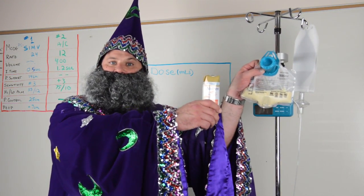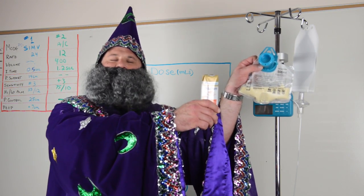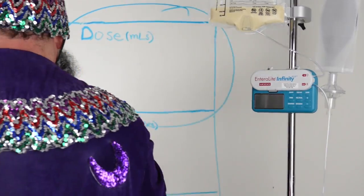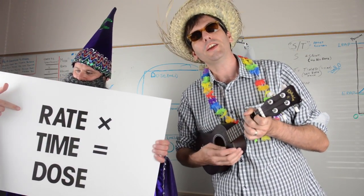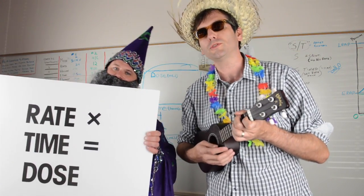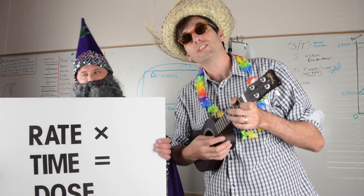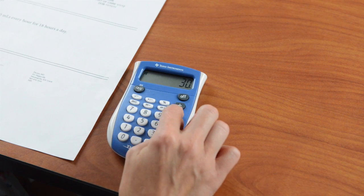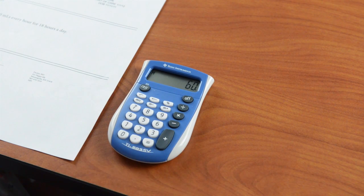The first four times, you put in the amount of food the pump can completely deliver in four hours. The fifth time, you put in an amount of food the pump can completely deliver in two hours. You know the rate and time, so you can figure out the dose. Rate times time equals dose. For the four-hour feedings: 30 milliliters multiplied by 4 hours equals 120 milliliters. For the two-hour feeding: 30 milliliters multiplied by 2 hours equals 60 milliliters.